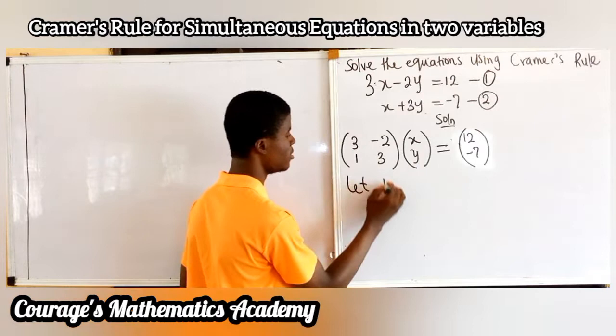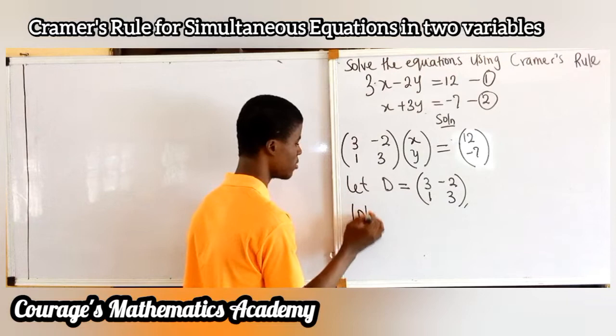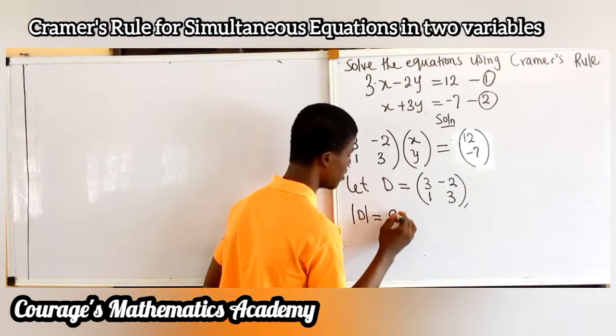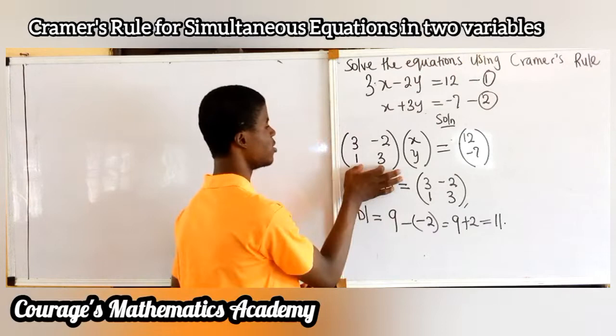Let D be equal to this matrix: 3, 1, minus 2, 3. Then we look at the determinant of the matrix. D equals 3 times 3, that's 9, minus 1 times minus 2, which is minus 2. So I have 9 plus 2, and that is equal to 11. So the determinant of matrix D is 11.